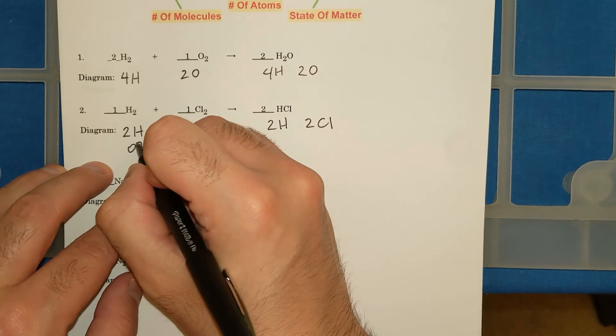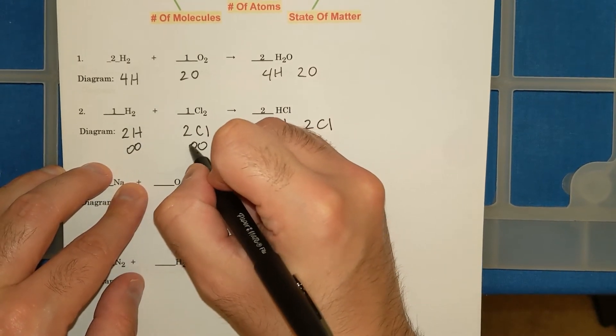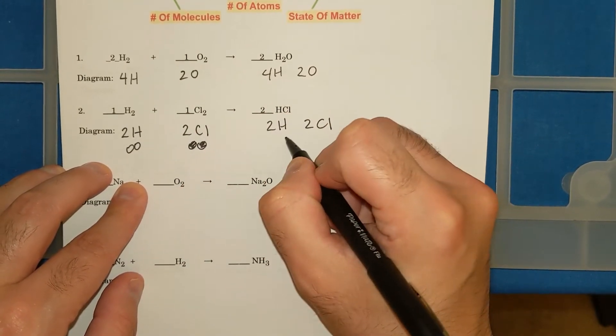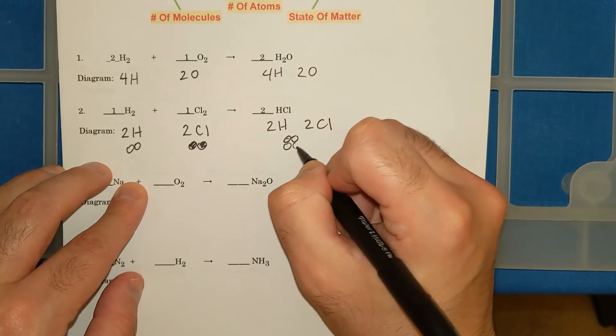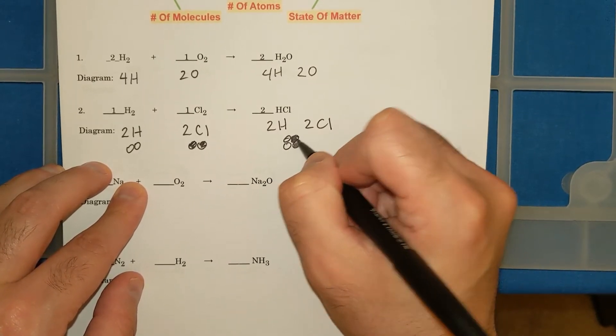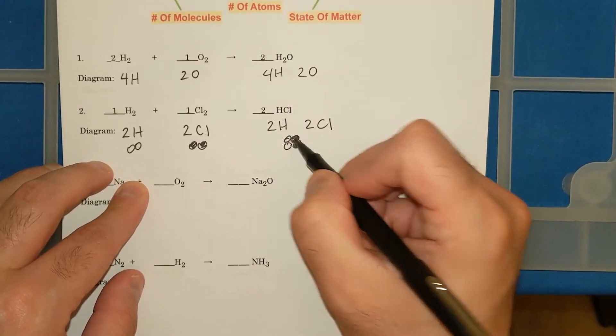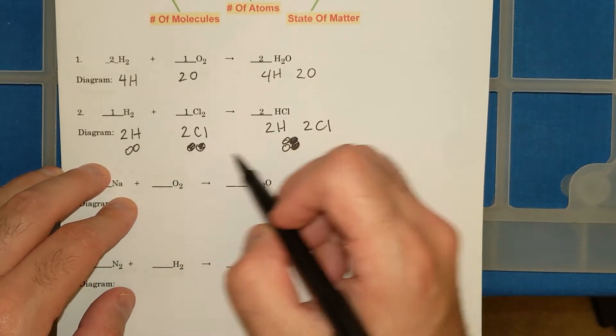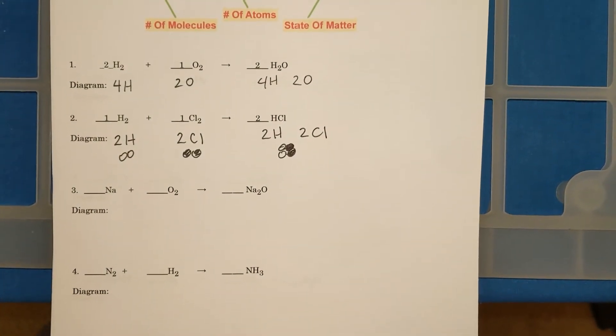2HCl means I have 2 H's and 2 Cl's. I could also draw these if I wanted to. Let's say Cl's are shaded. And then I have HCl, HCl, Cl's are shaded. I have 2 H's, 2 H's, 2 Cl's, 2 Cl's. That's balanced.